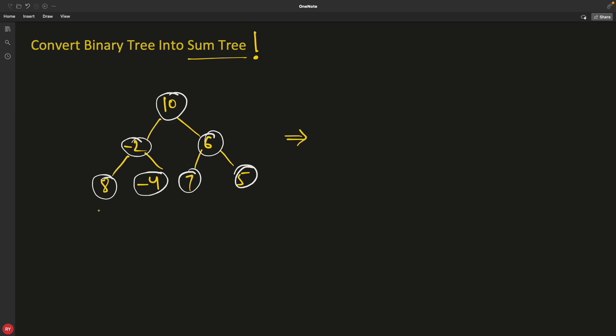So sum tree is nothing but modifying your original tree in such a way that the parent node will have summation of the child node. I'll repeat this again. You will modify this tree in such a way that the parent node will have the summation of its children nodes.